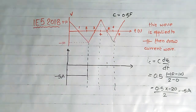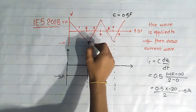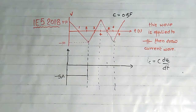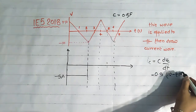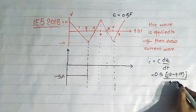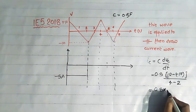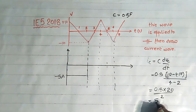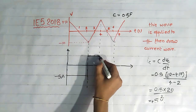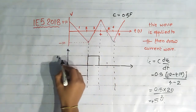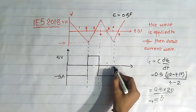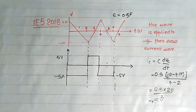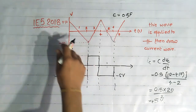From 2 to 4 seconds, the straight line goes from -10 to +10 volts. The capacitor current equals 0.5 times (20/2), giving plus 5 amperes. Similarly, from 4 to 6 seconds we again get minus 5 amperes. In this way we can draw the complete current waveform when the voltage waveform across the capacitor is given.